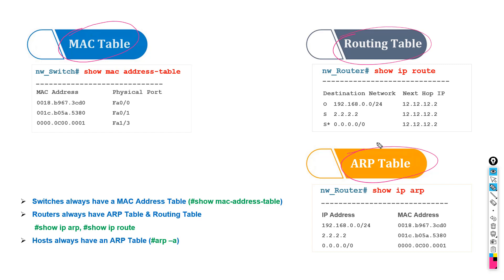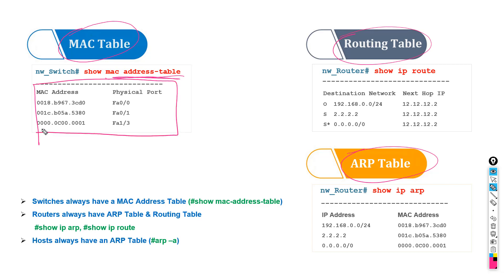All switches have a MAC address table, or we sometimes call it a CAM table as well. The command in Cisco switches and some other switches is usually 'show MAC address table.' This command shows us a table which gives us the correlation between MAC addresses and physical ports.